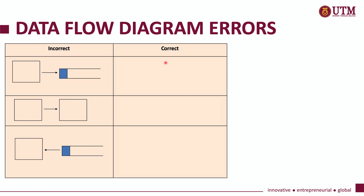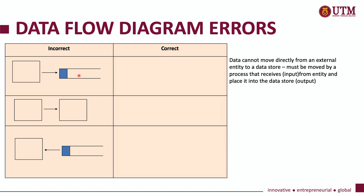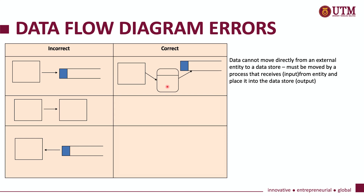Another data flow diagram error is when you connect an entity directly to a data store. A data flow cannot move directly from an entity to a data store. You need to make sure there is a process in between: input flows from the entity into the process, and output flows from the process into the data store.